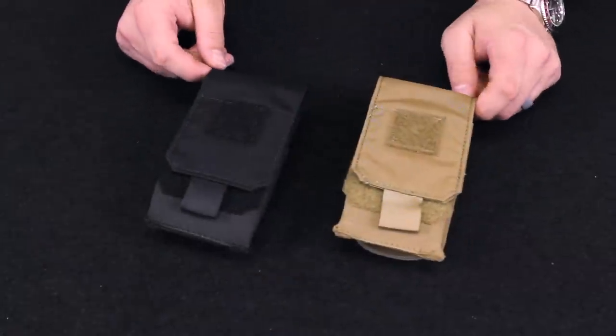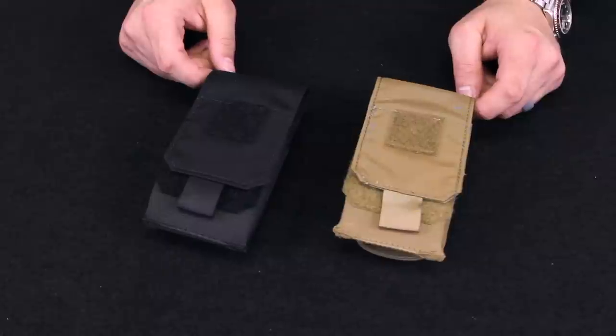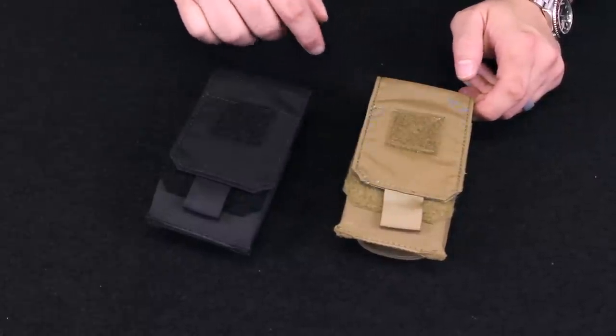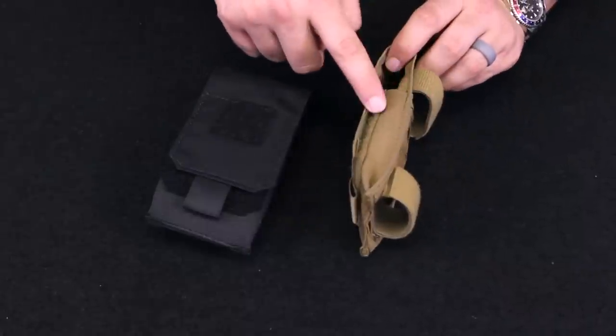A couple of quick final notes on the ITS Slimline pouch. These are made in the USA from Genuine 500D Cordura Nylon. They are available in black and coyote. The closed pouch measures 6 inches tall, 3 and a quarter inches wide, and 1 and a quarter inch deep.